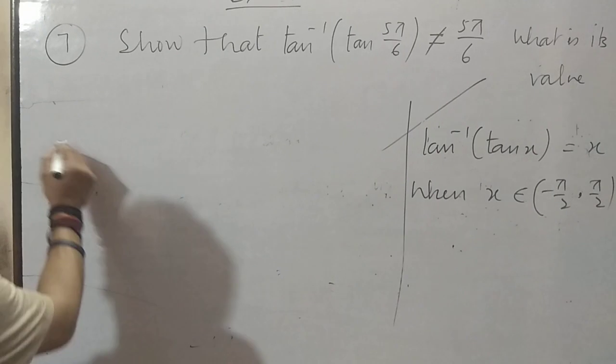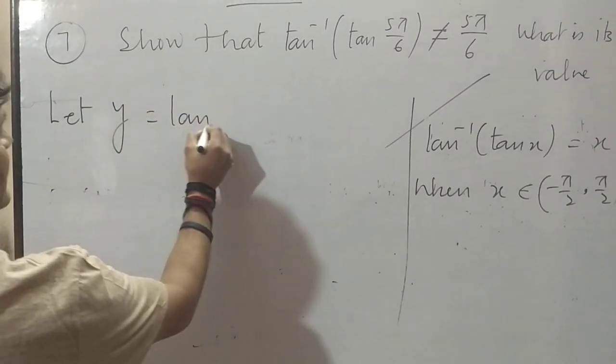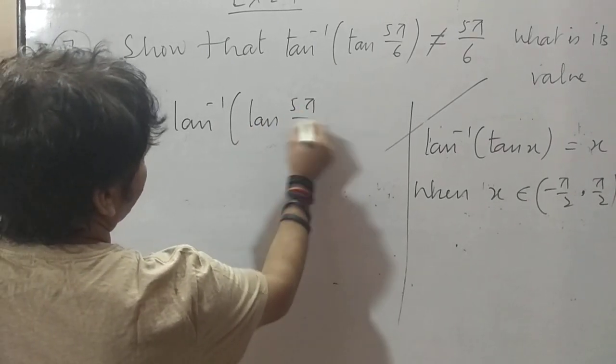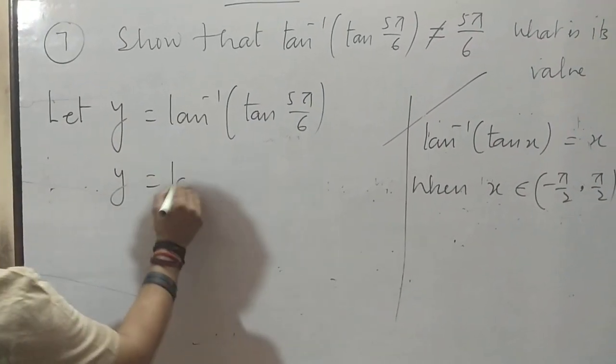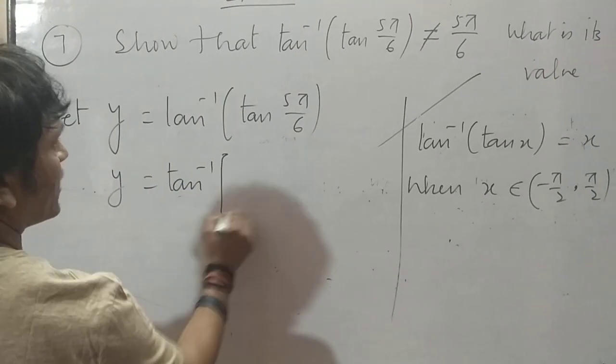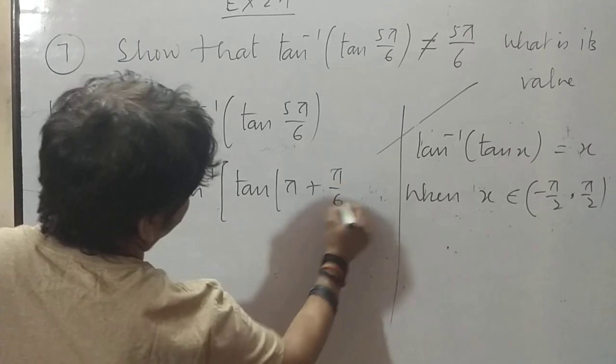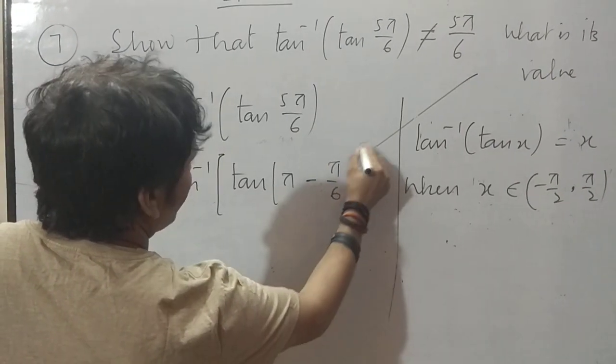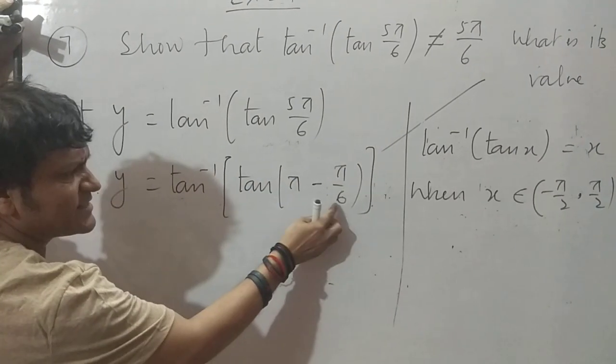What will be the answer? Again you will take let y equals tan inverse tan 5π/6. Now listen very carefully. y equals tan inverse tan π minus π/6. Check it out, is it coming 5π/6 or not? Take out the same.